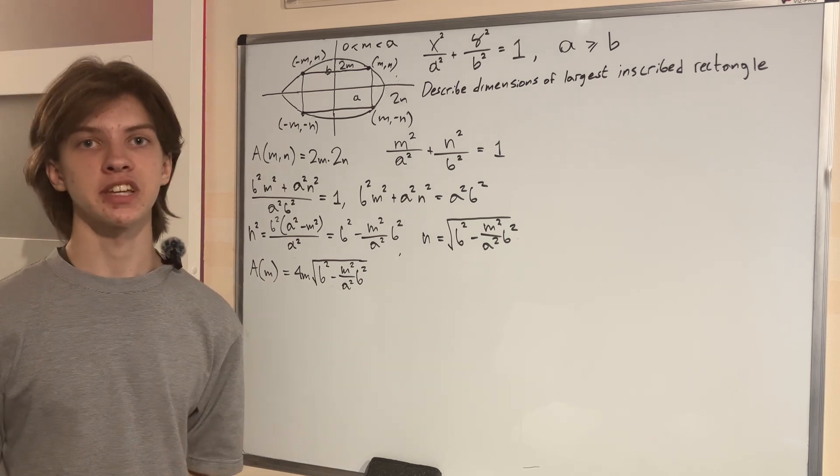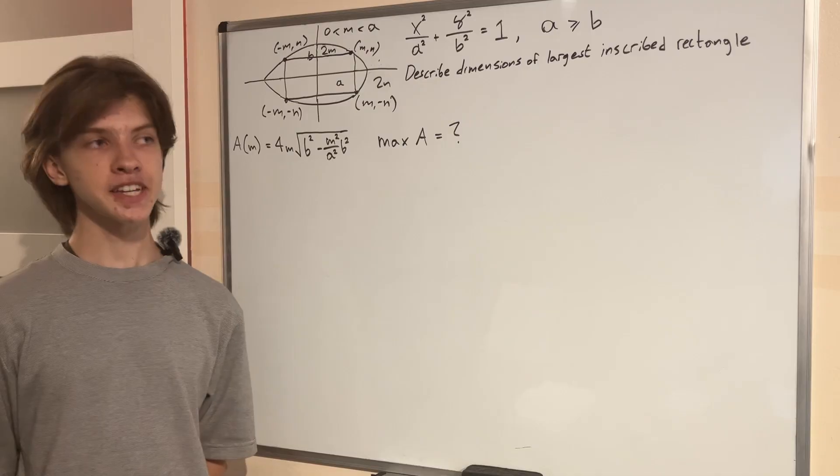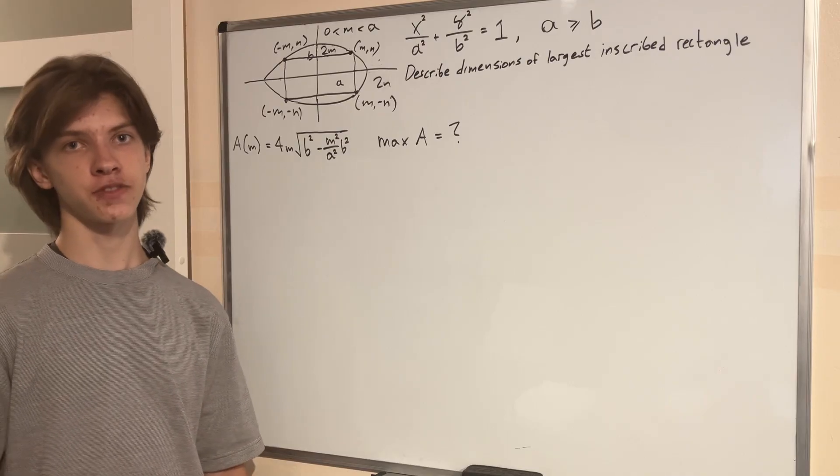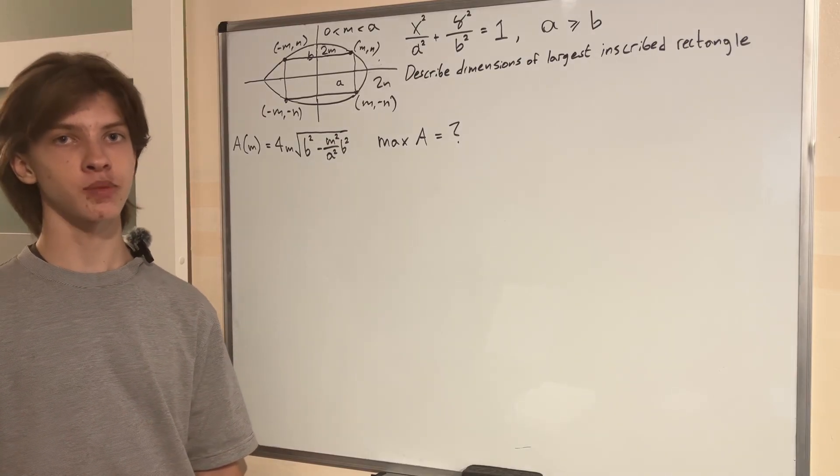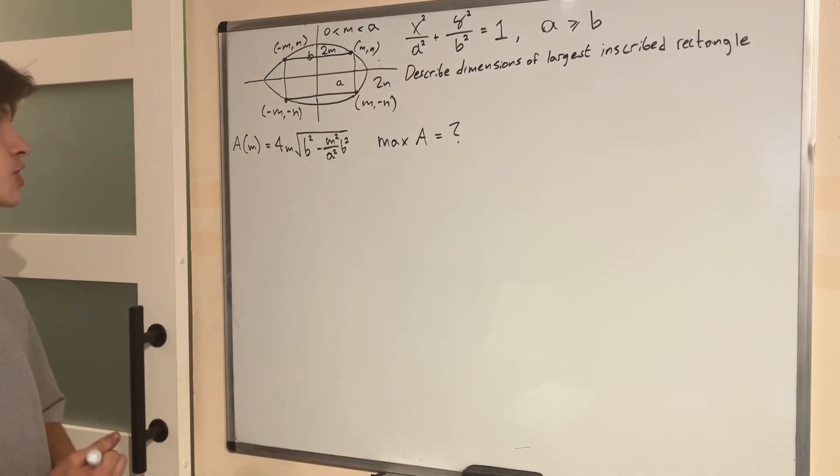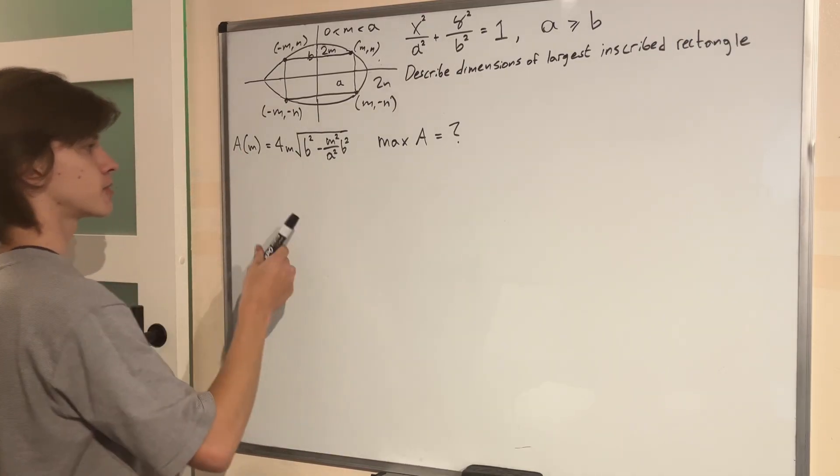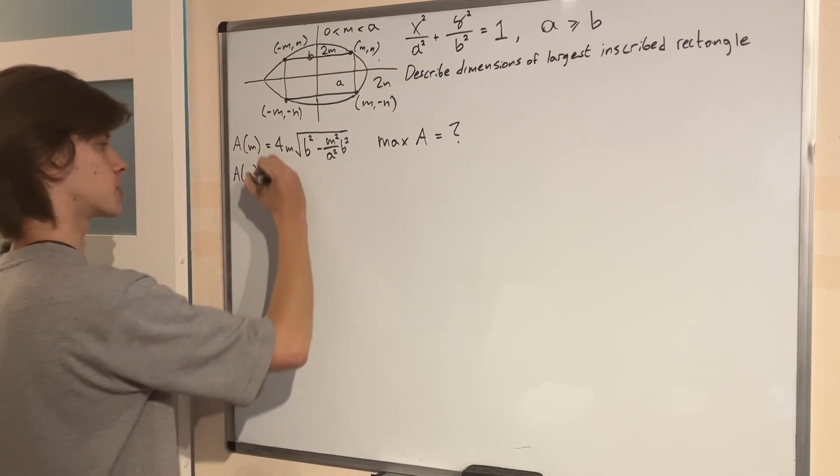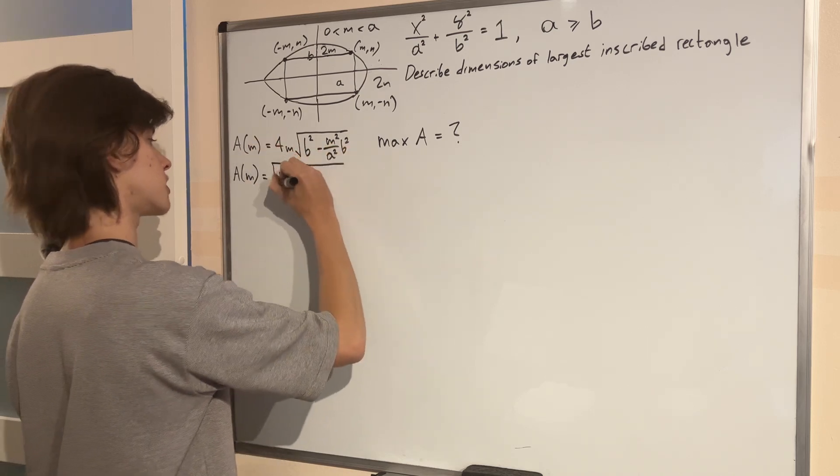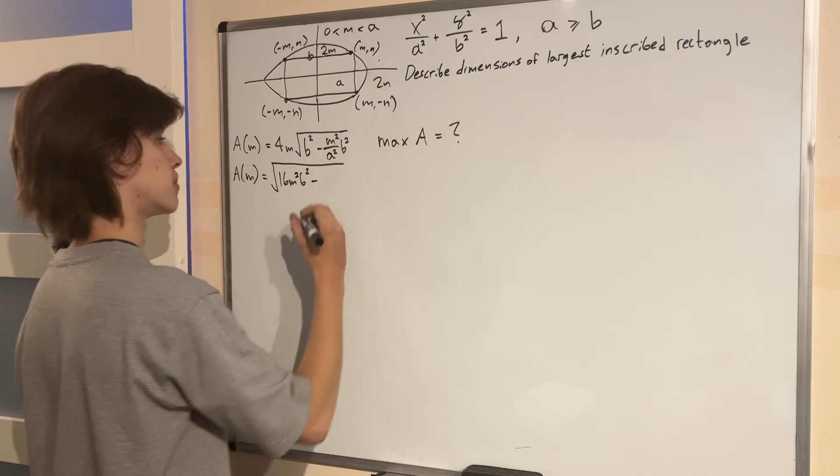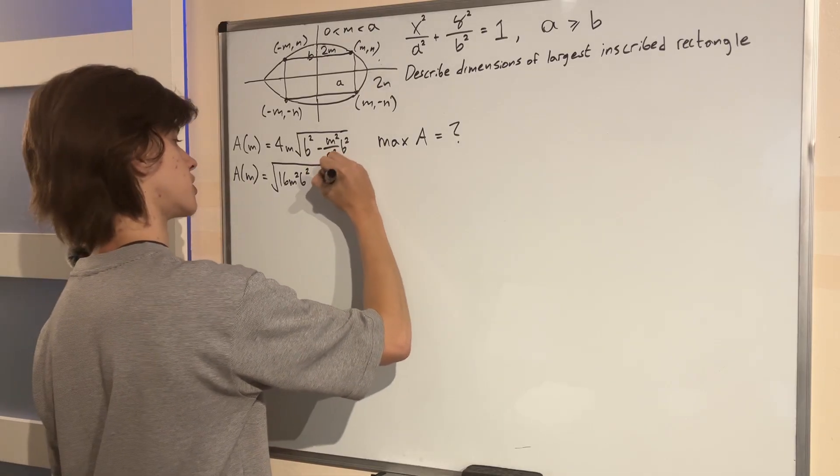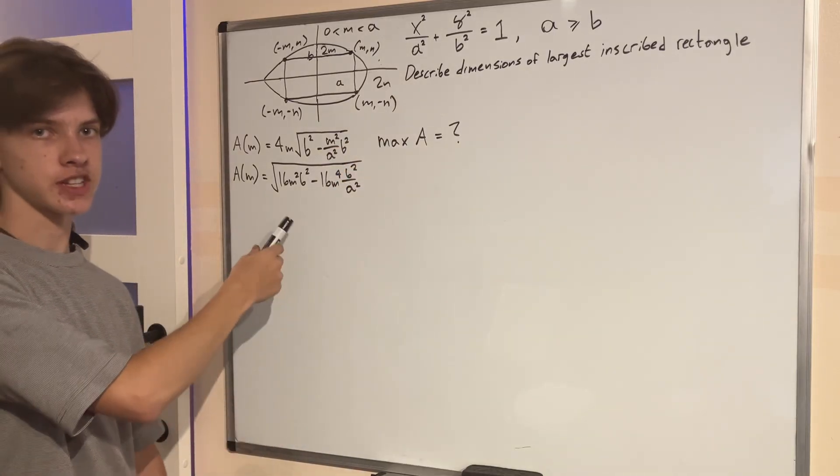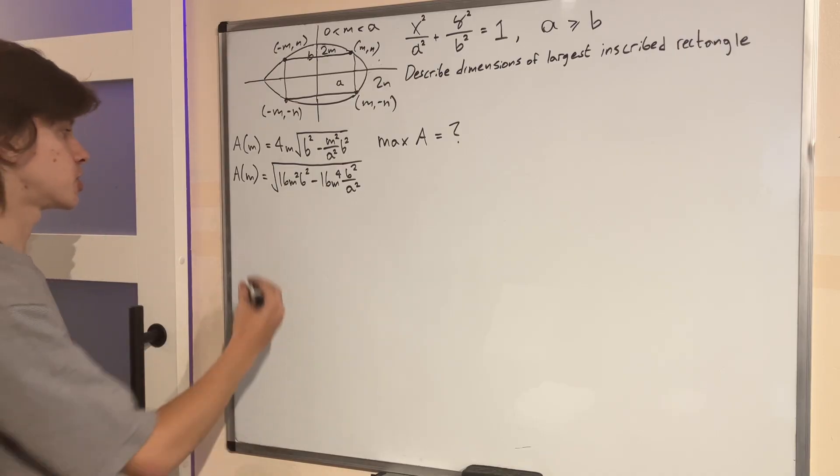So the problem of finding the maximum of this function can be solved by taking its derivative, setting it equal to zero, and then finding all the inflection points and justifying why the points we found will indeed result in a maximum of the function and not something else. So let's start by taking the derivative. It's a bit of a tedious process, but it can be simplified if we put this 4M into the square root. And so we just square 4M to get 16M squared. And then we multiply it by everything in the root to get 16M squared B squared, then minus 16M to the fourth times B squared over A squared. This is going to be our function, one big square root, and inside is another function. So we can differentiate this using the chain rule.